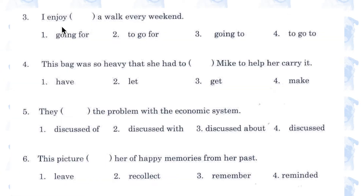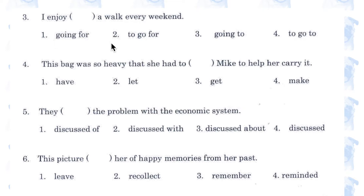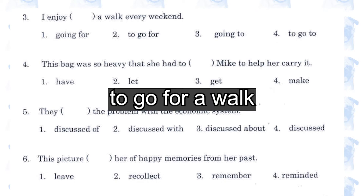Number 3. 'I enjoy going for / to go for / going to / to go to a walk every weekend.' Enjoy is a verb that requires a gerund, so number 2 and number 4 must be eliminated. We don't say 'go to a walk', we say 'go for a walk'. So, number 1.